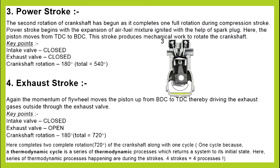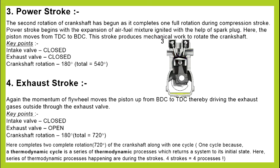In the exhaust stroke, the piston moves from TDC to BDC. The inlet valve is closed and the outlet valve is open, allowing exhaust gases to exit. The cycle then repeats again, with the crankshaft making 360 plus 360 degrees total rotation — 2 full rotations — and the piston moves 4 times through the cycle.